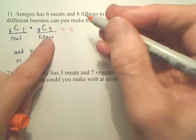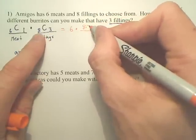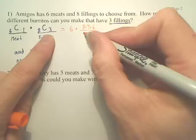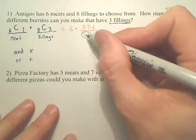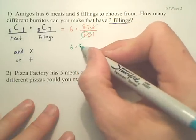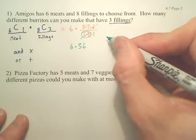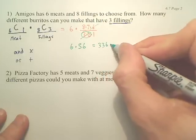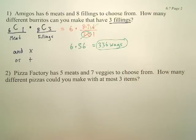Now 8C3 is a little more complicated. 8C3 — that's 8P3, which is 8 times 7 times 6, divided by 3 factorial. The 3 factorial gives you 6, which cancels with that 6, so isn't that 6 times 56? Six times 56 gives you 336 ways to make a three-filling burrito.